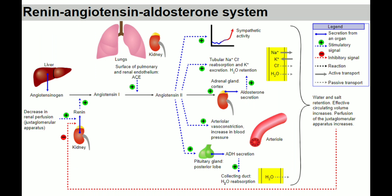The renin-angiotensin-aldosterone system works as follows: the liver produces angiotensinogen. With the help of renin — secreted in conditions of low blood pressure, that is decreased renal perfusion (decreased blood flow) — angiotensinogen is converted to angiotensin 1. Renin is secreted from the juxtaglomerular apparatus of the kidney. ACE enzyme, found on the surface of pulmonary and renal endothelium, converts angiotensin 1 to angiotensin 2.